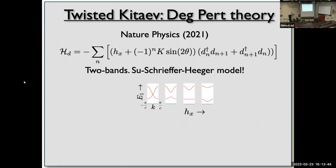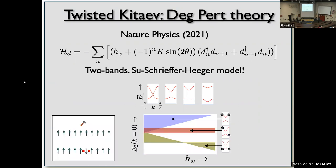Because of this strong-weak hopping structure, there are two bands of domain walls. When a photon comes and flips a spin, it creates two domain walls, and the system has three options: both domain walls in the lower band, one in each band, or both in the upper band. Each option corresponds to a different energy-momentum region, and calculating these regions in the simple model gives a picture that looks qualitatively like the experiment.